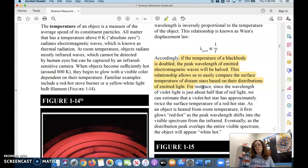This relationship lets us compare the surface temperature of distant stars based on their distributions of emitted light. So remember when we talked about how each star's element emits a different light spectrum? This is another way, another way that we can study stars far away.